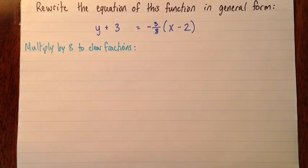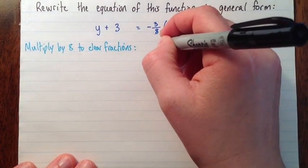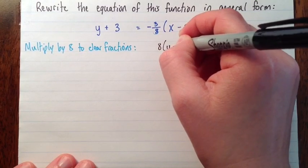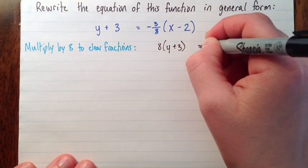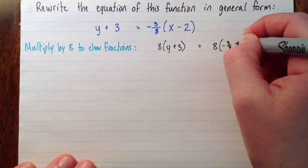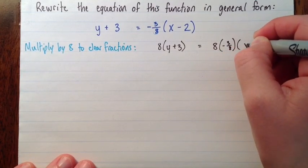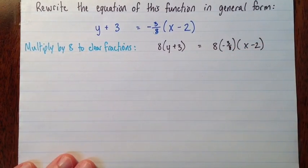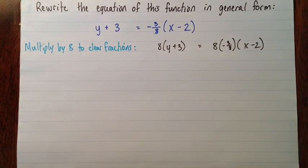So we'll multiply by 8 to clear the fractions. So I'm going to multiply both sides by 8. 8 times negative 3 over 8 times x minus 2. Okay, and now I simplify.